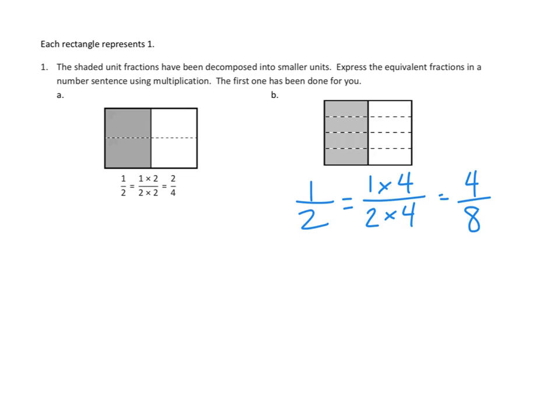We would have done it in Lesson 6 through addition, which is one-eighth plus one-eighth plus one-eighth plus one-eighth. Eventually, it's four-eighths. This time, we've gotten there with multiplication. Two times four is our eighths, and one times four is our numerator, four. Same thing, though, right? Four shaded boxes out of eight boxes total. Awesome.